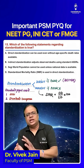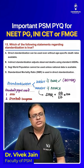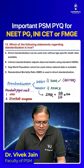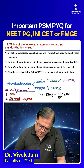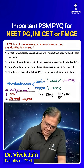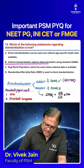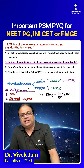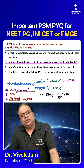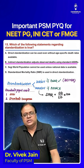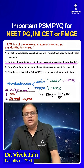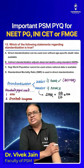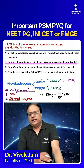No one will ask you to do all the calculations in MCQ, but we should know this concept. The answer to question 13 is: indirect standardization is observed deaths upon expected deaths into 100. SMR is for indirect. Look at choice A — direct can only be used when age-specific death rates are available.